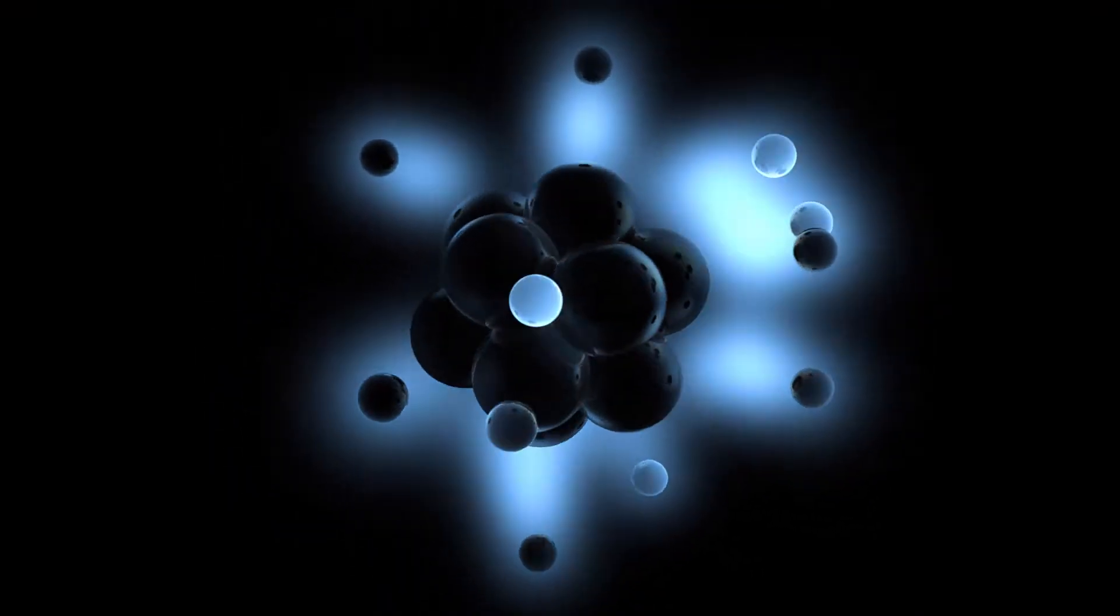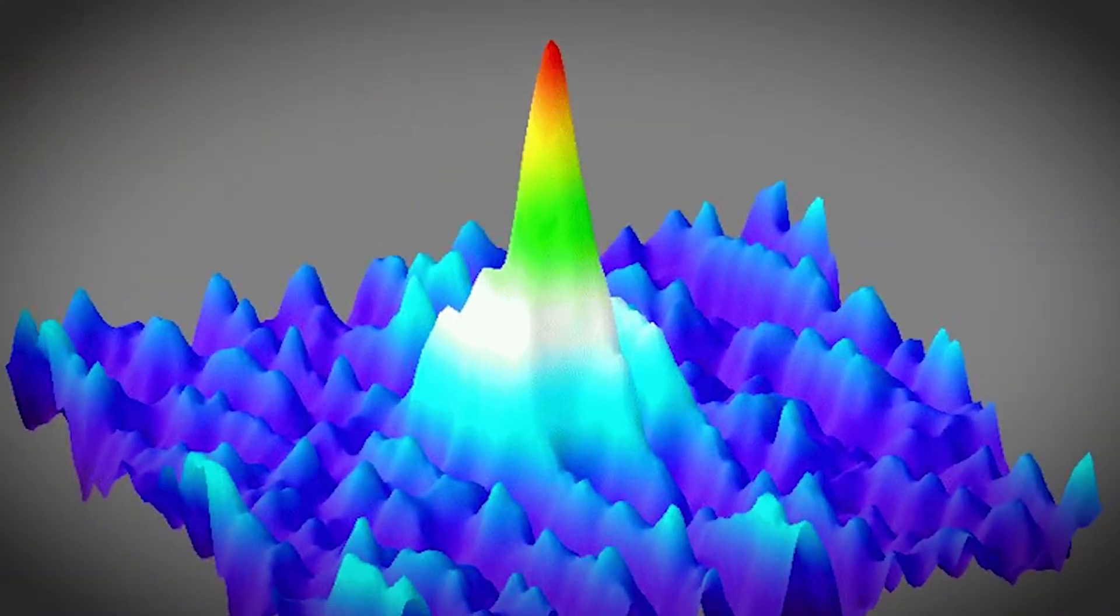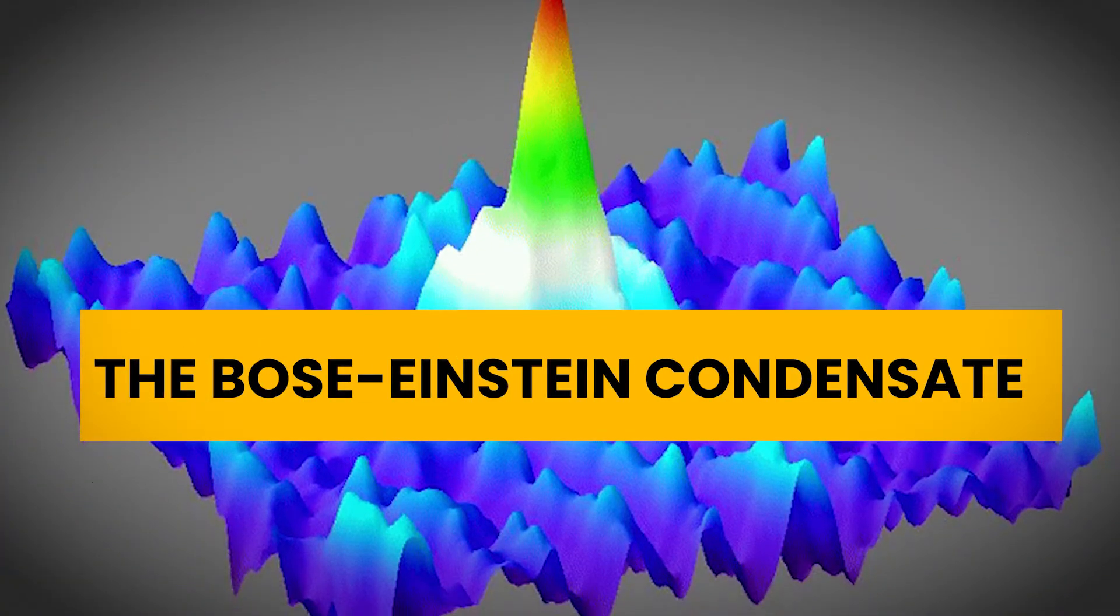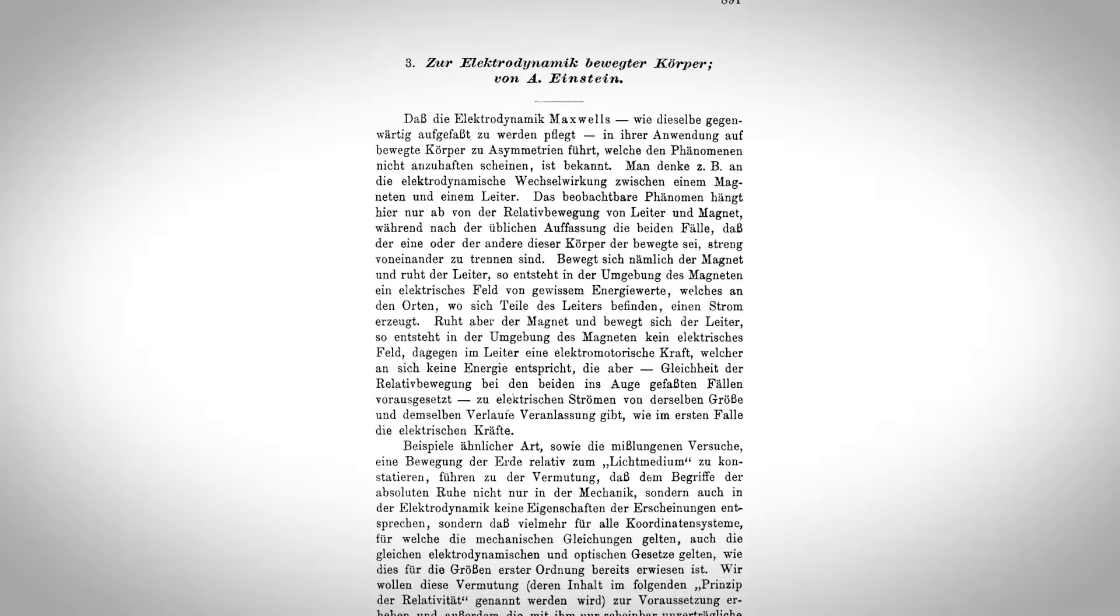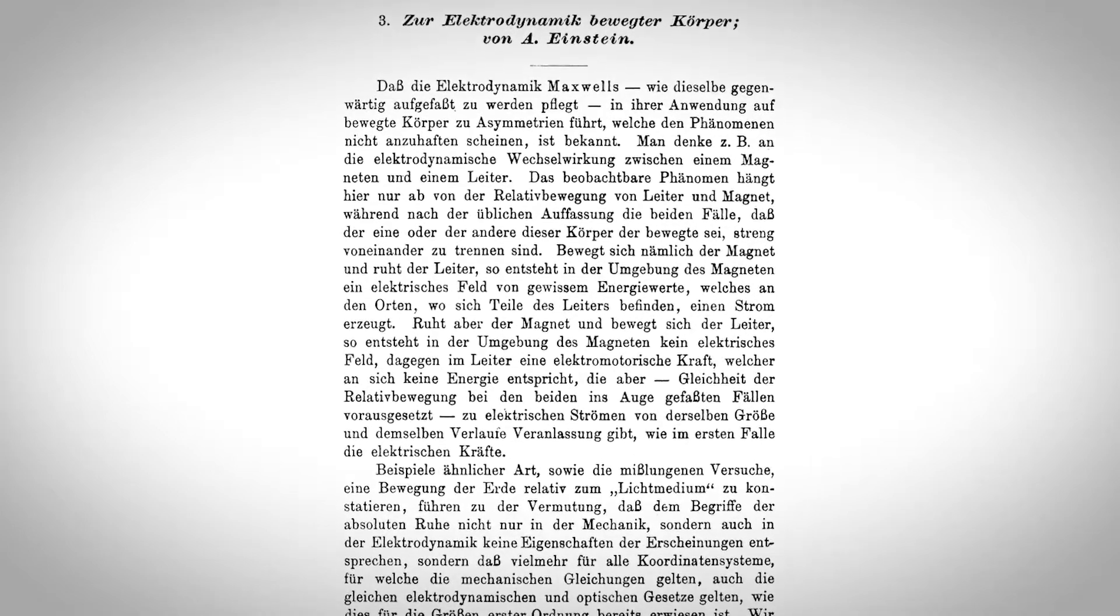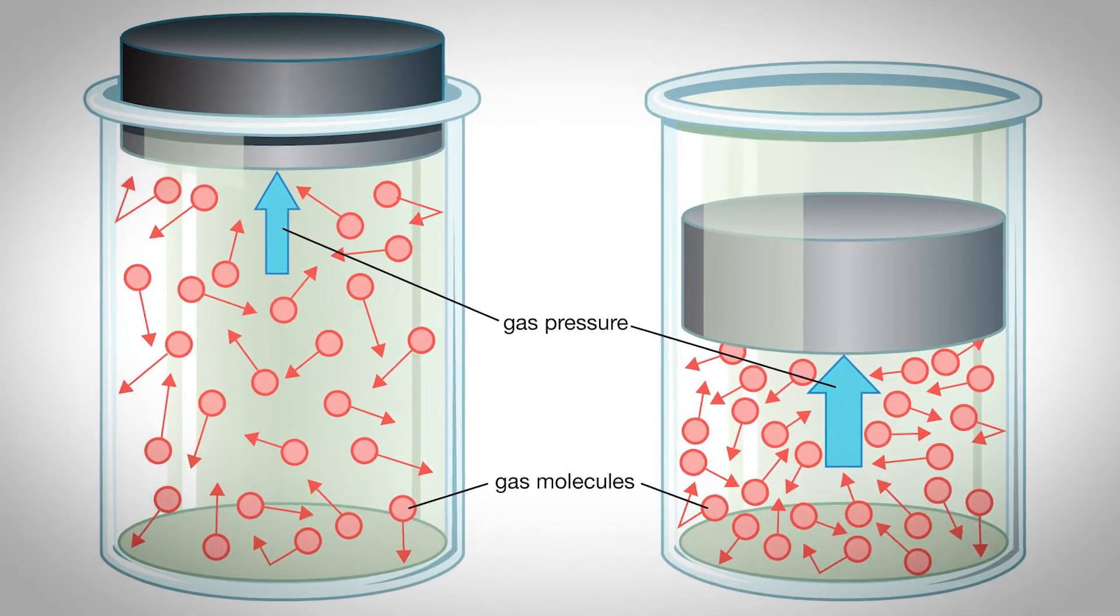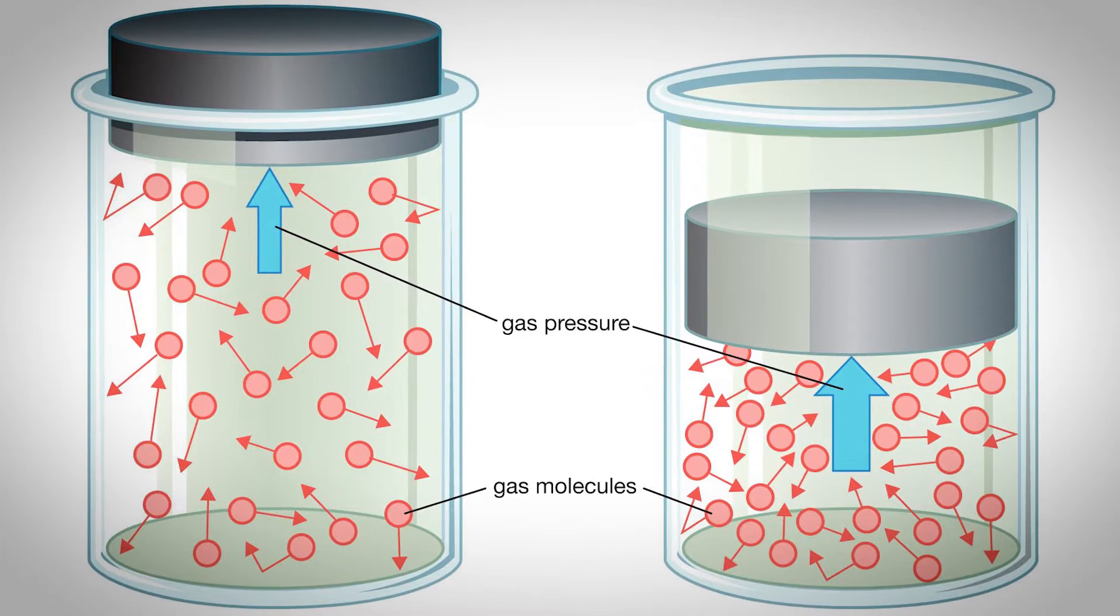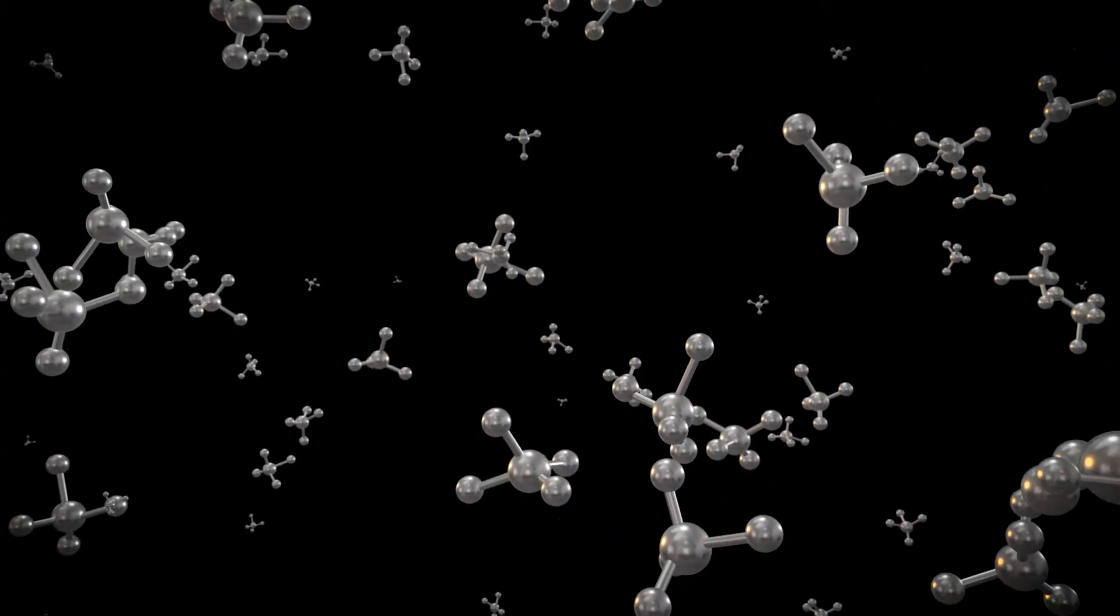Avogadro's number is the number of atoms in one mole of a molecule or an element. The fourth is the Bose-Einstein condensate. In 1924, Einstein was sent a paper from physicist Satyendranath Bose. This paper discussed a detailed way to think of photons of light as a gas. Einstein generalized Bose's theory to an ideal gas of identical atoms or molecules for which the number of particles is conserved.